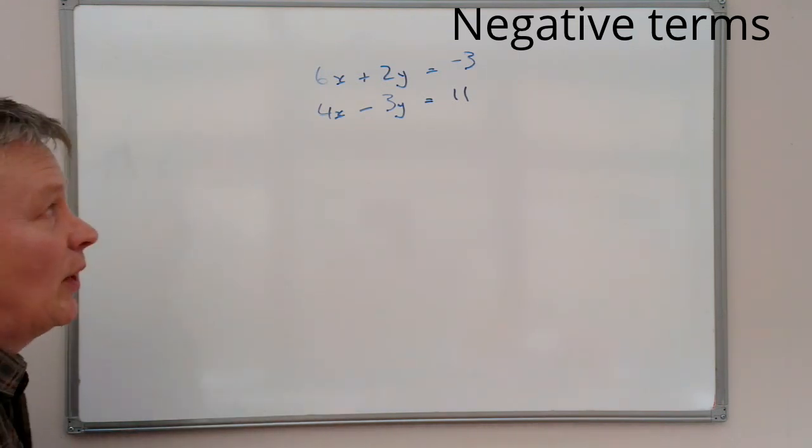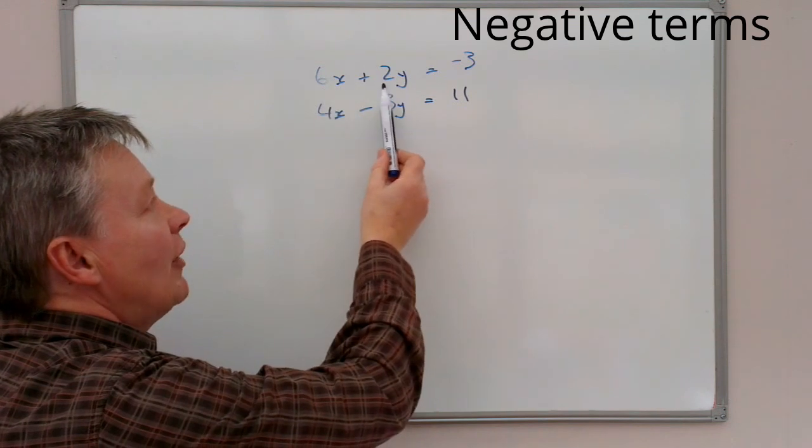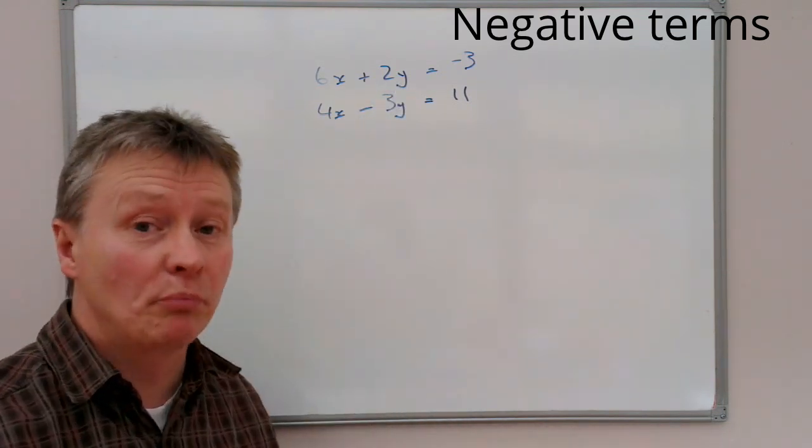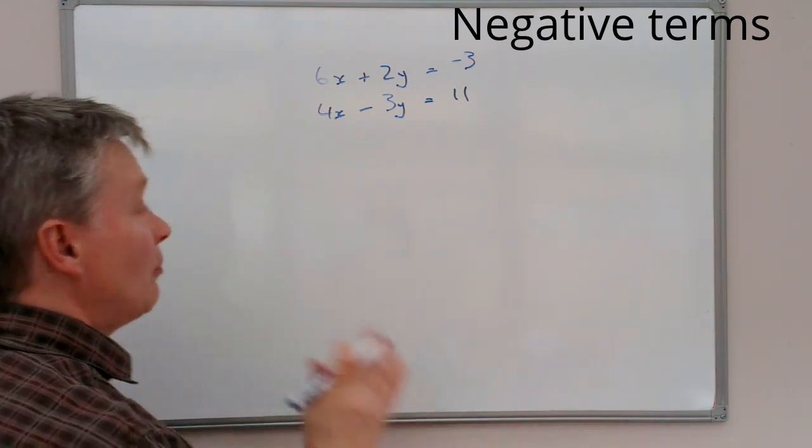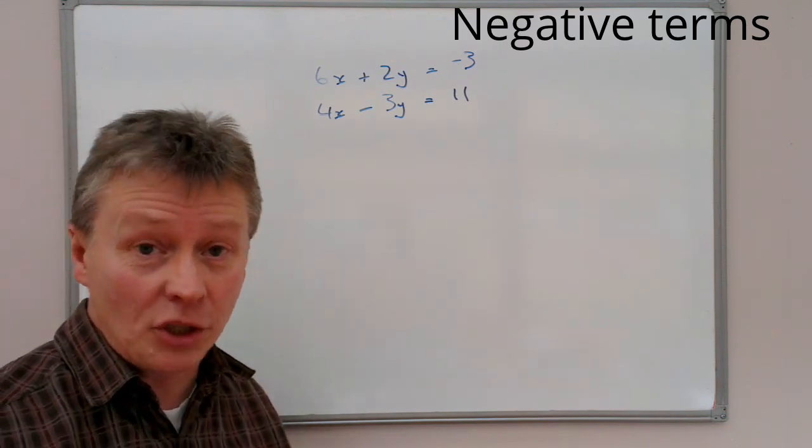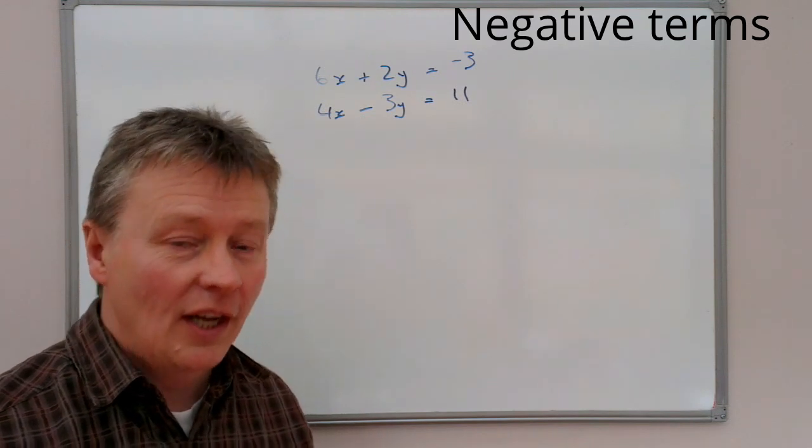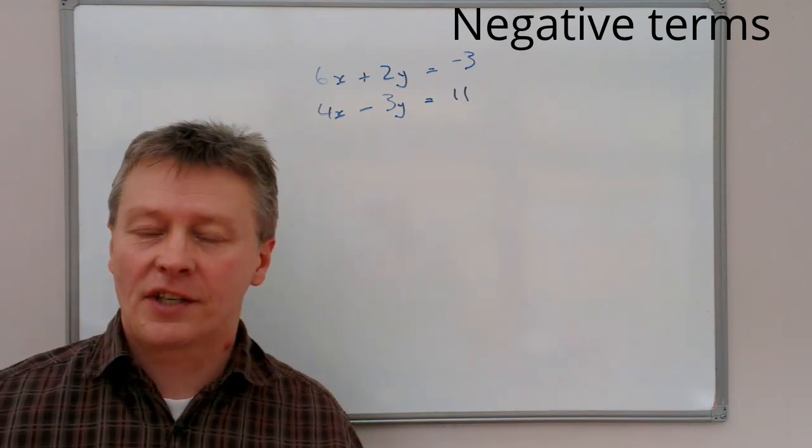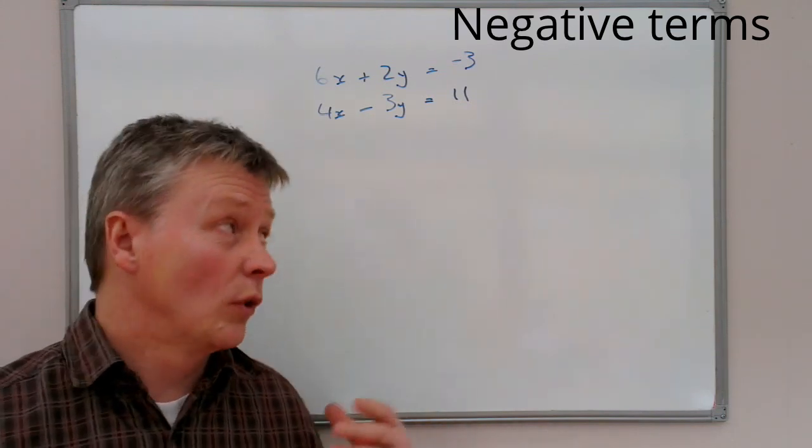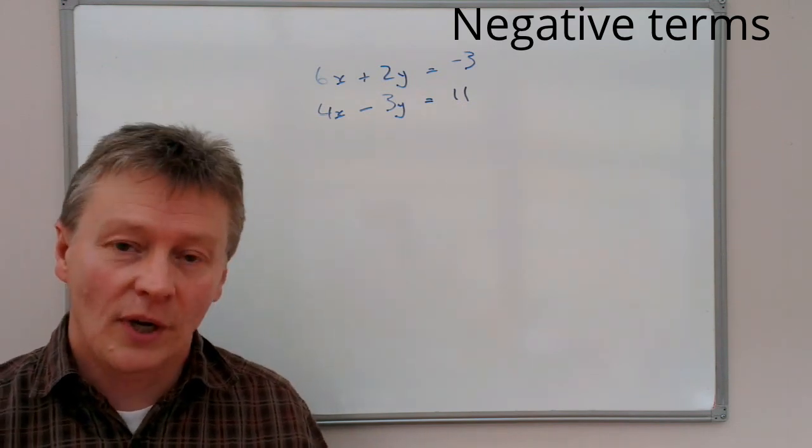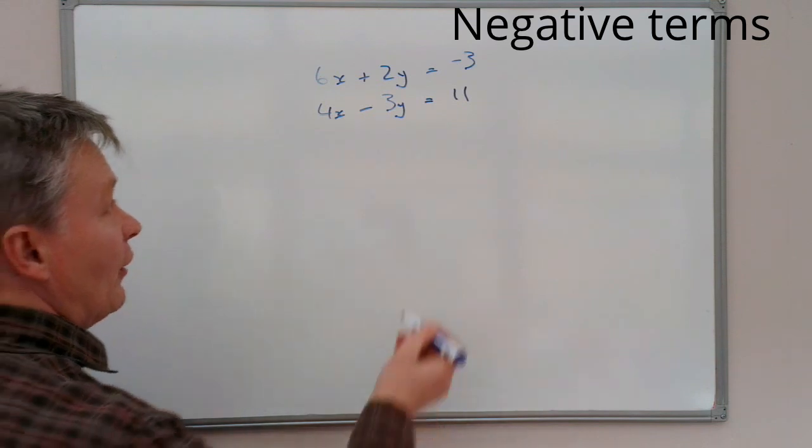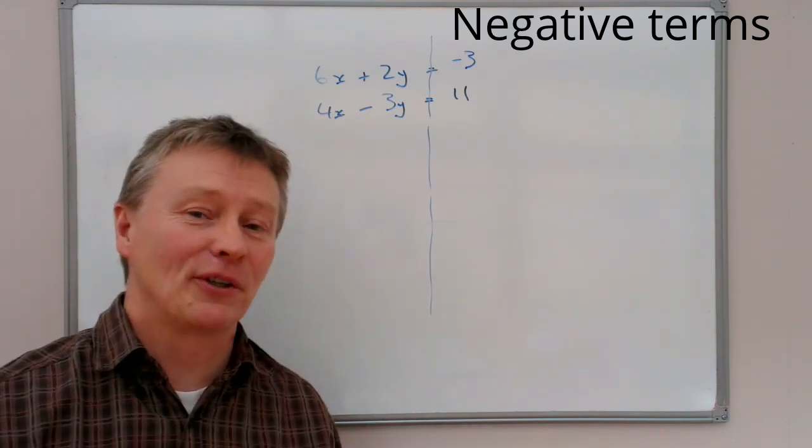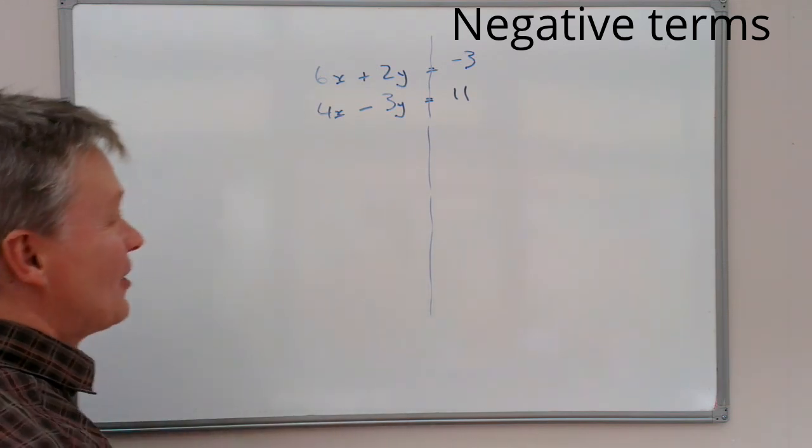What we need to do is find a way of manipulating the equations so that we can get rid of either the x terms or the y terms. If I multiply the top equation by 3, this positive 2y will become positive 6y. If I multiply the bottom equation by 2, I'll have a negative 6y, and if I add those equations together it means I can get rid of the y terms. It's always very useful to work down the page and make sure your equals remain in the middle of the page.